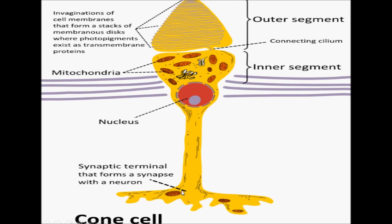This is the diagram of the cone cell. It has an outer segment and an inner segment. The nucleus is the brain of the cone cell. The synaptic terminals form synapses with neurons, and the mitochondria — the powerhouse of the cell — provide energy. The membranous disc-shaped invaginations of the cell membrane form a stack of membranous discs where photopigments exist as transmembrane proteins. Connective cilia connect the outer segment to the inner segment.